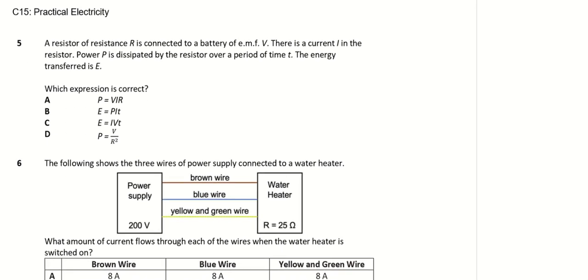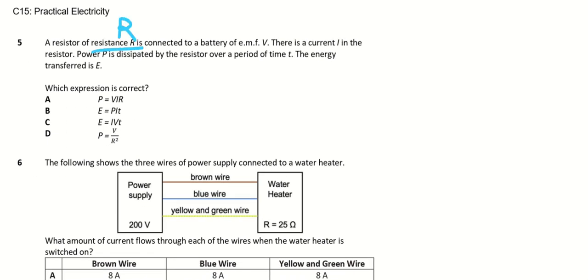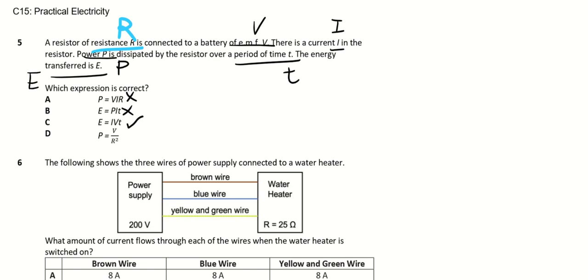I need the power. A resistor of resistance R is connected to a battery of EMF V with a current I. Power is dissipated in the resistor. Which expression for power P is correct? I don't even need to go through all the options — I just need to find the correct answer. The correct one is C. Dissipated means given out.